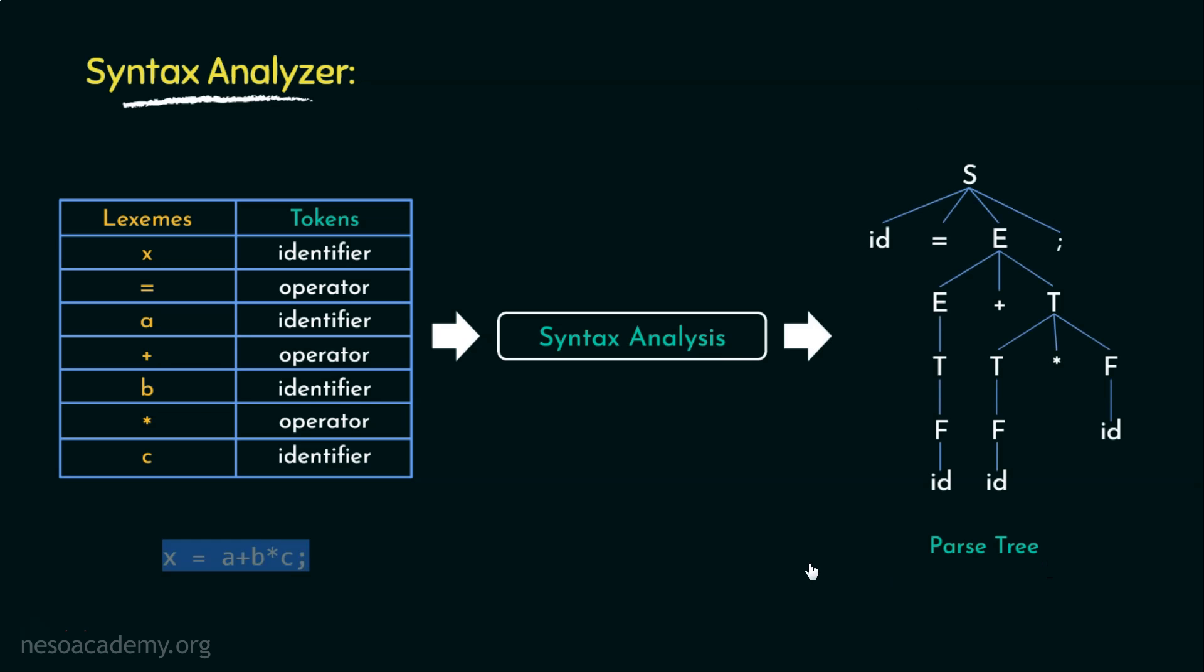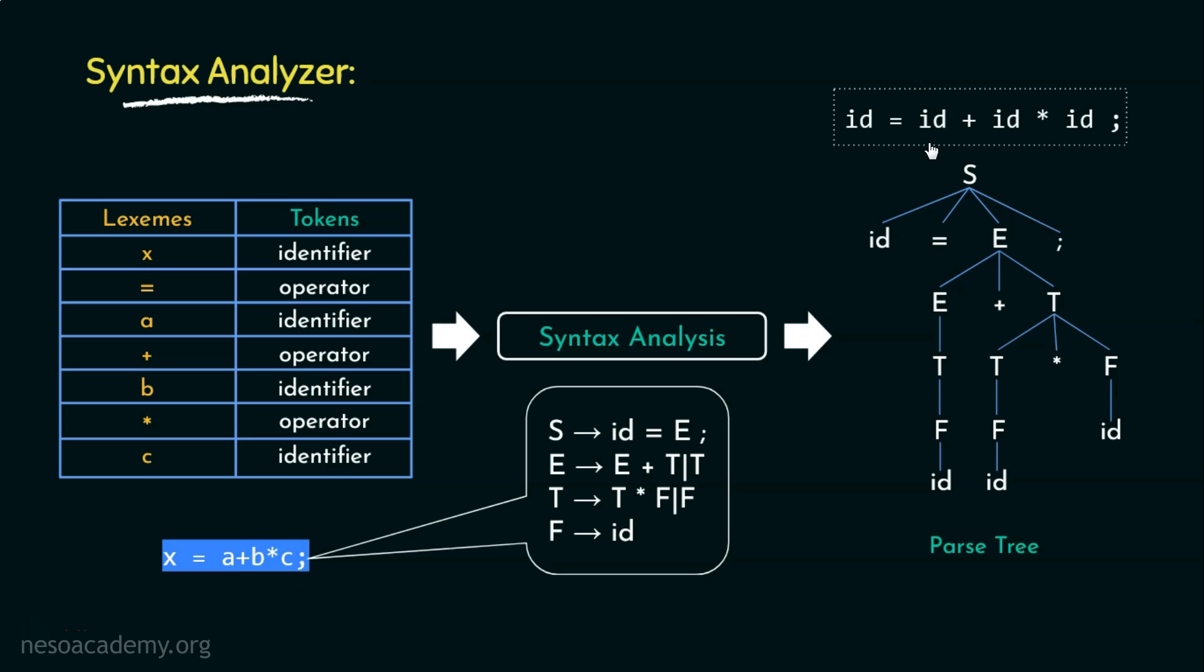And for generating the parse tree of the arithmetic expression, the parser makes use of the grammar, which is specific to that particular form of arithmetic expression syntax. And if the yield of the parse tree is the same as the syntax of the expression, then there is no syntax error. Otherwise, there is.